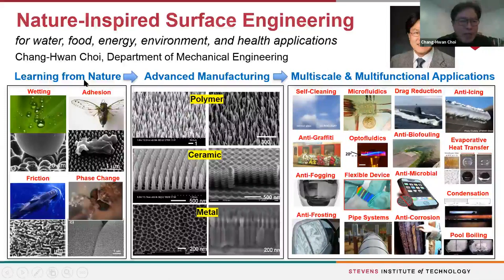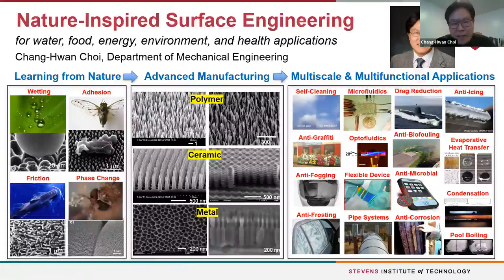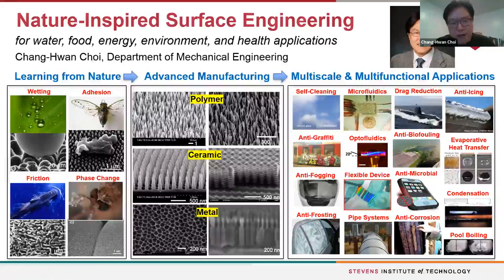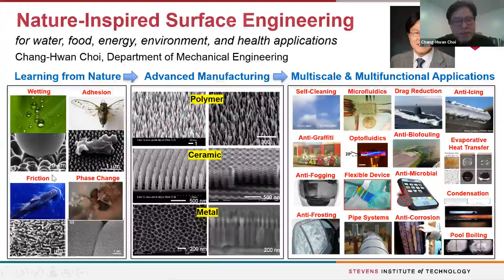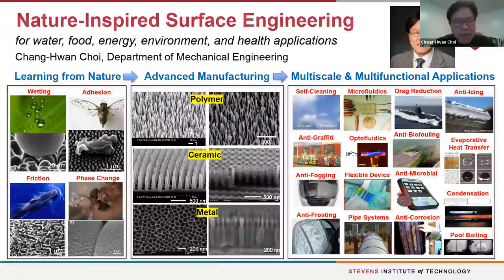If you look at nature, you can find many lessons: nature uses small-scale structures — micro-scale or nano-scale structures — which are combined with unique surface chemistry and mechanical properties, so that they can control many behaviors such as wetting, adhesion, friction, condensation, icing, or phase change problems for water.